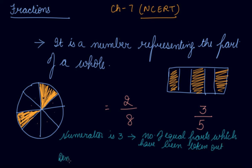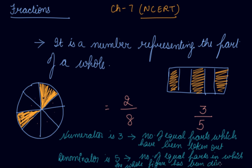The denominator is 5, the number of equal parts in which the whole figure has been divided. The whole figure is divided into 5 equal parts, so this is the denominator.